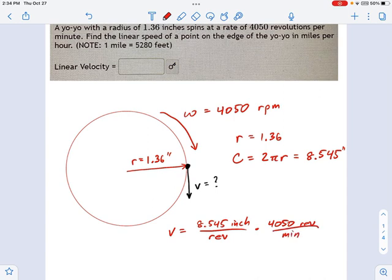Let's calculate what that is. We just multiply it by 4,050. Okay, so from this I get V equals 34,607.8. The revolution units cross out, and all we have left is inches per minute.